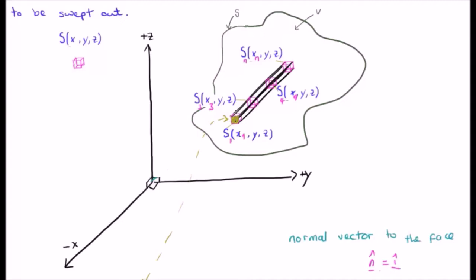Now, if we vary, if we just hold Y and Z constant and vary X, let's say we go from here right up to here, what we'll do is we will sweep out a tube, or we will sweep out a volume which looks like an angular tube like that. And this particular shape, of course, is inside the volume V, which is bounded by the surface S.